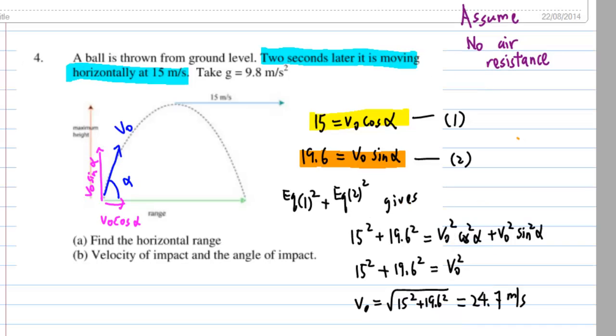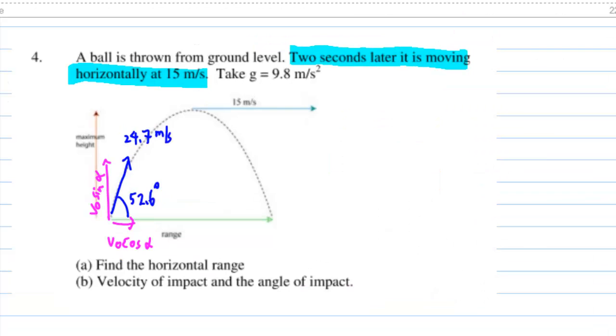The square of equation 1 plus the square of equation 2 gives left hand side 15 squared plus 19.6 squared, right hand side V0 squared cosine squared alpha plus V0 squared sine squared alpha. Therefore, V0 is equal to 24.7 meters per second. We can now draw 24.7 meters per second for V0 and alpha 52.6 degrees.